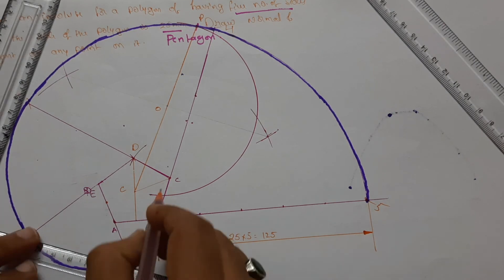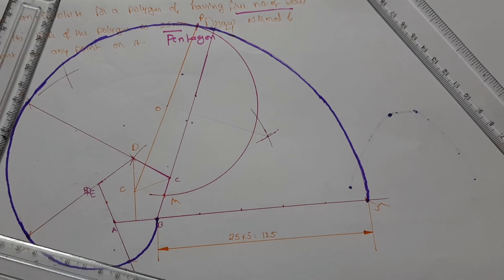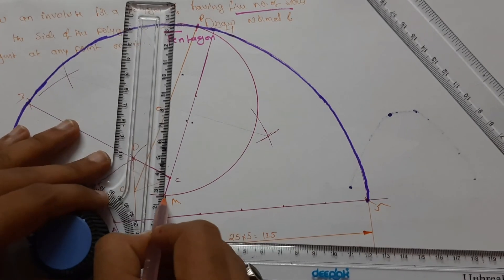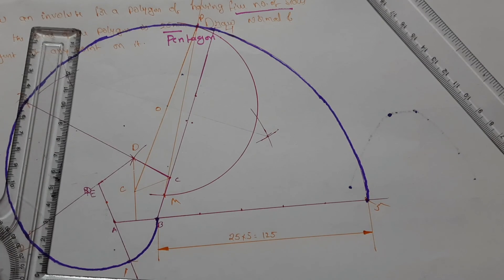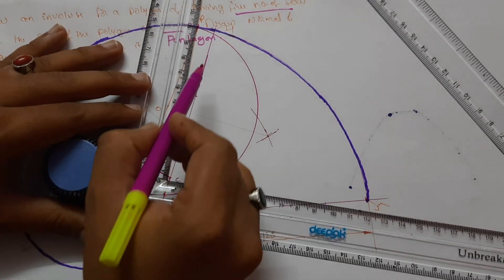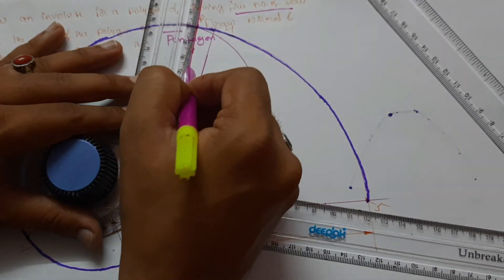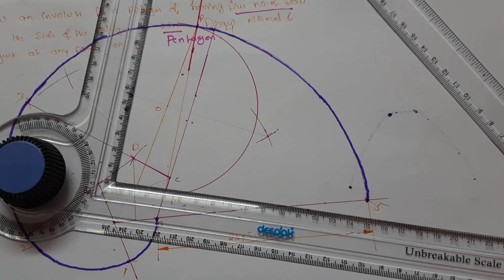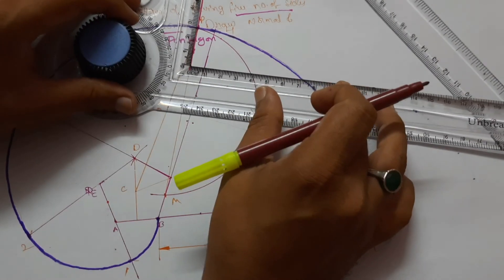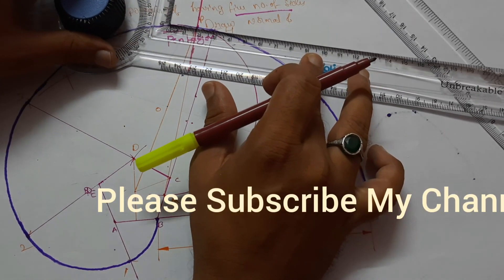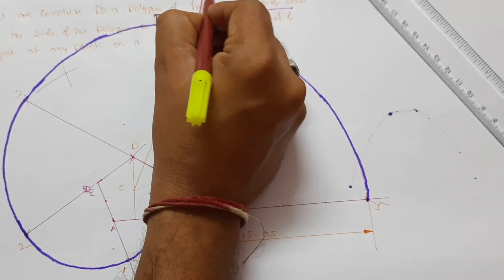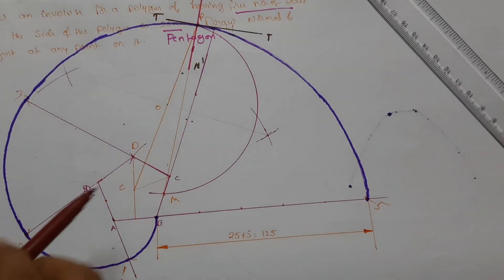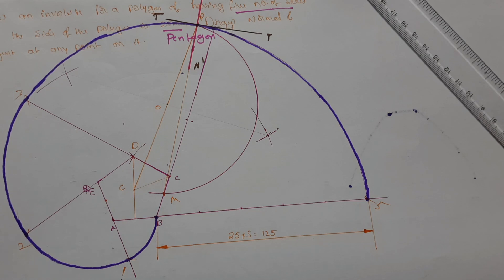The semicircle intersects the pentagon — mark this intersection as M. Join M and P — this is your normal. Draw perpendicular to this normal and you will get the tangent. This is the tangent and this is the normal. This is how you draw the involute, normal, and tangent.